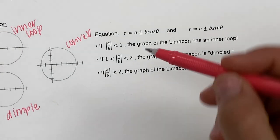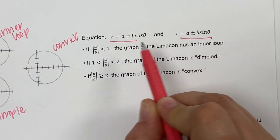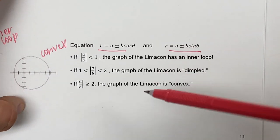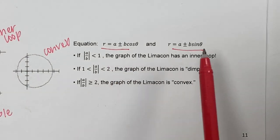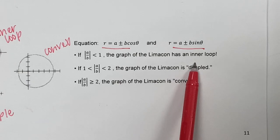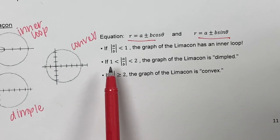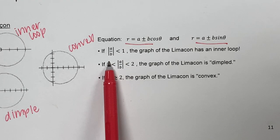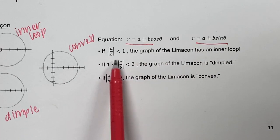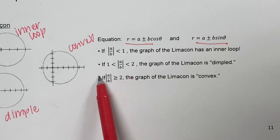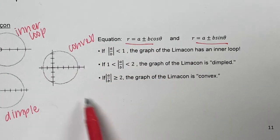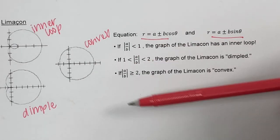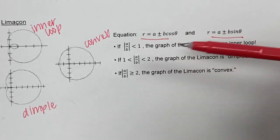Here are the two equations. Again, the difference is sine and cosine. But the difference between limaçon equations and cardioid equations is that these numbers will not be the same. You'll divide the first number by the second number to decide if it's an inner loop, dimple, or convex. If the absolute value of that ratio is less than one, it's an inner loop. If it's between one and two, it's a dimple. If it's bigger than two, it's a convex. You'll explore this more in your polar project, but pay attention to this when taking the homework quiz on Schoology.